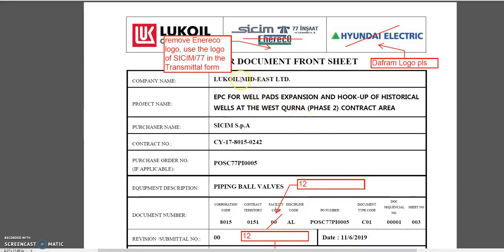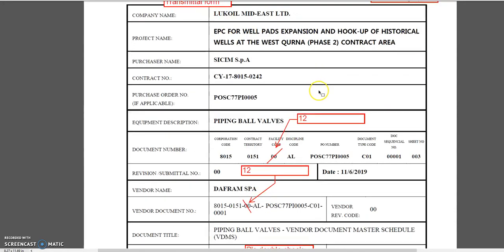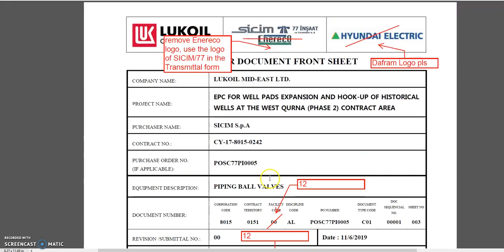Alright, now here we have the vendor documents, the C01 of DAF from SPA. In the cover page, CGM 77 in SAT and Enoreco — last week we learned that this is not the scope of work of Enoreco, so this is wrong. They have to change it — they have to remove and use the correct logo. In the transmittal form there is a logo, and they have to change this to the correct DAF logo.